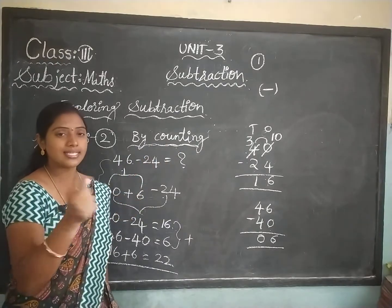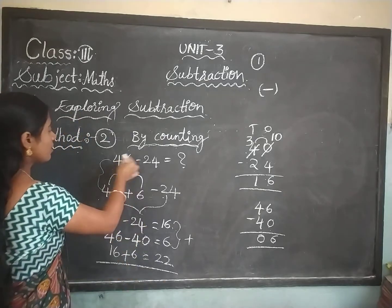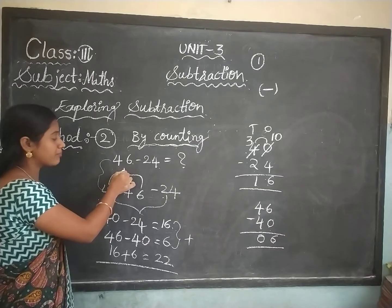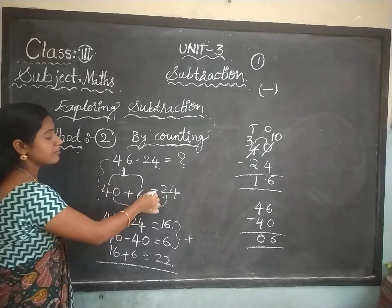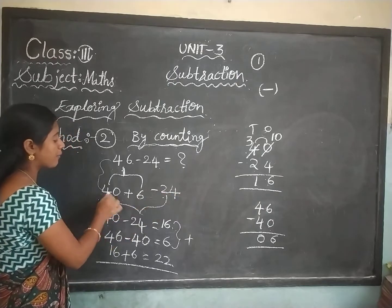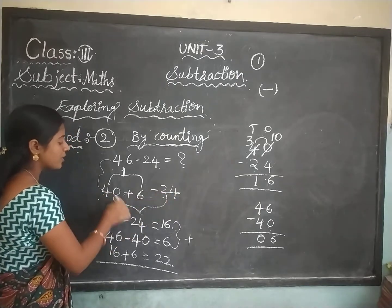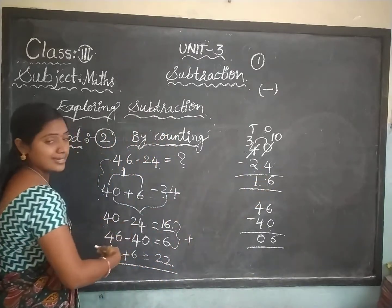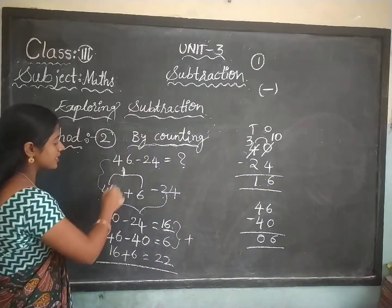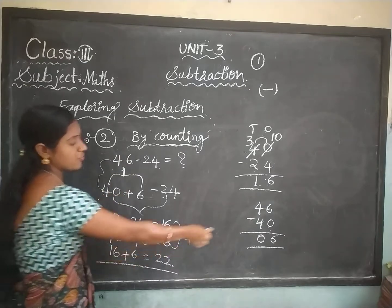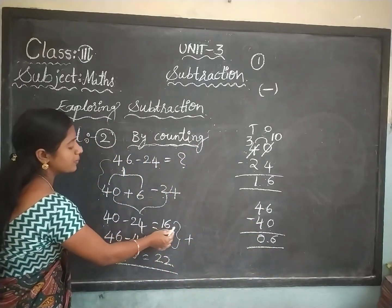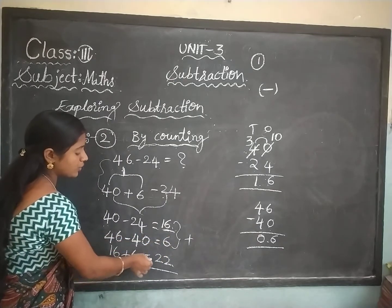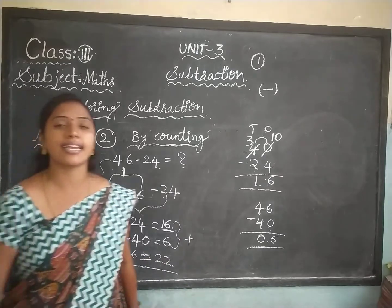Don't get confused. Let me explain once again. For 46 minus 24, break the first number: 40 plus 6, minus 24. First do 40 minus 24, which equals 16. Then 46 minus 40, which equals 6. Then add: 16 plus 6 equals 22. This is the by-counting second method.